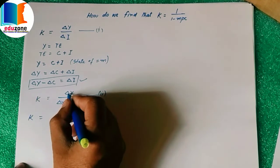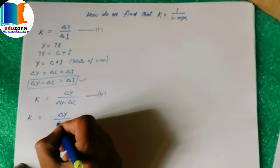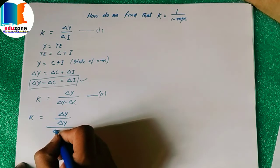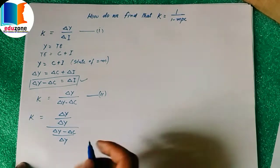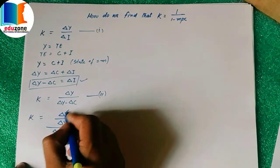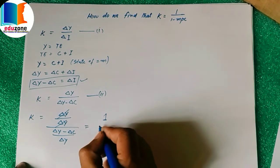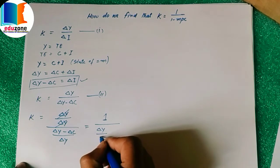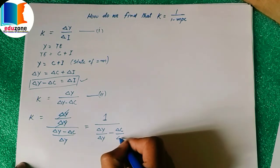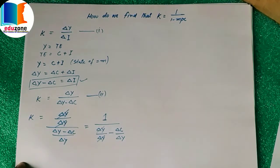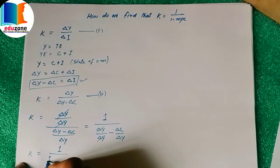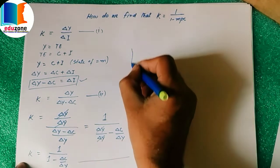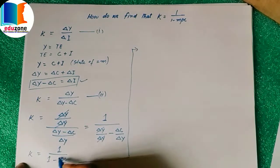Now dividing both the numerator and denominator of the right side by ΔY, we get K = (ΔY/ΔY) / (ΔY/ΔY − ΔC/ΔY). Since ΔY/ΔY cancels to 1, this simplifies to K = 1 / (1 − ΔC/ΔY).